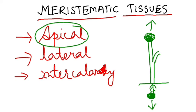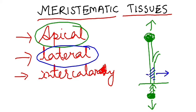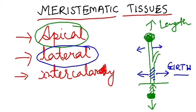Next comes lateral meristem. Lateral means side — it is present along the sides and is responsible for sideways growth, which in biology is called girth. So apical meristem is responsible for length, and lateral meristem is responsible for girth.